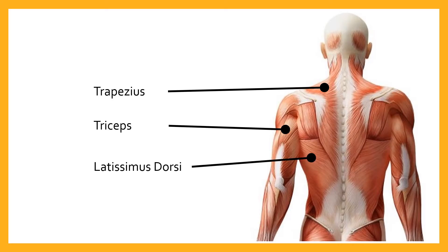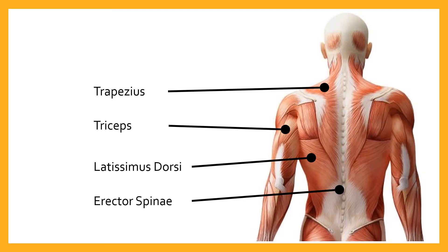Moving down the back, we've got the latissimus dorsi. Dorsi means 'of the back' — like a dorsal fin on a fish. The lats are well known from exercises like lat pull-downs. Then we've got the erector spinae — a series of muscles that run along the spine between the vertebrae, allowing us to lift up the spine. Erector means lifted up, spinae means of the spine, and they make the opposite movement to a trunk curl.